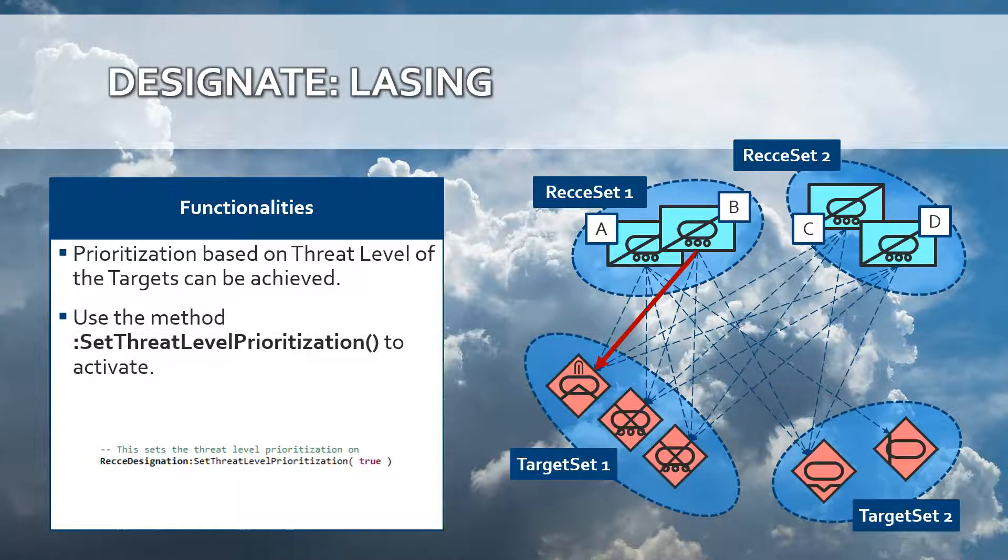This is a very important one. Depending on the type of target that has been designated, certain targets have a higher priority to be lased than others. In this example, SAM has the highest priority because it exposes the largest danger to pilots within an air-to-ground combat scenario. The method SetThreatLevelPrioritization can be used to activate this threat level prioritization.